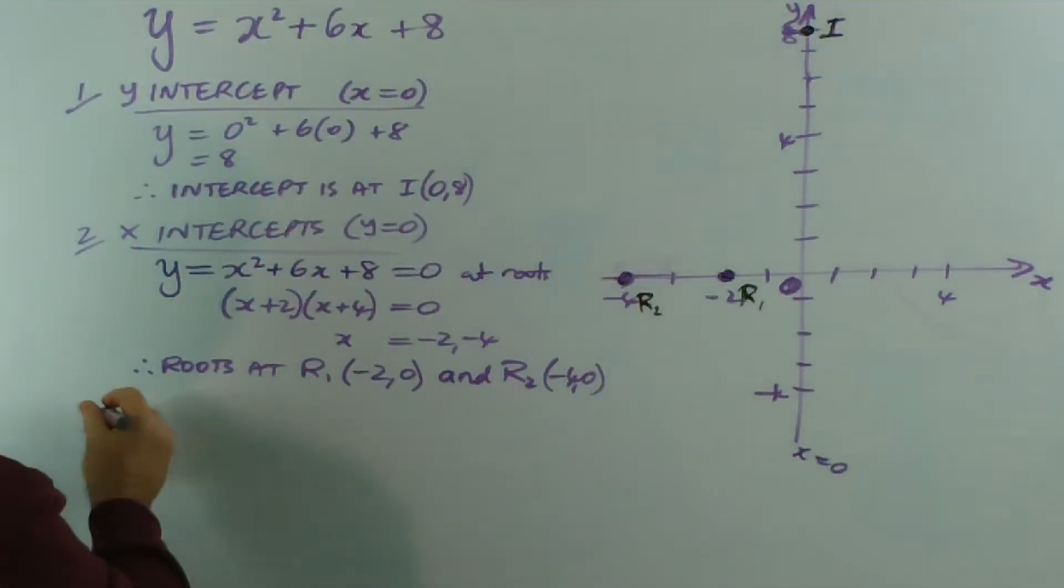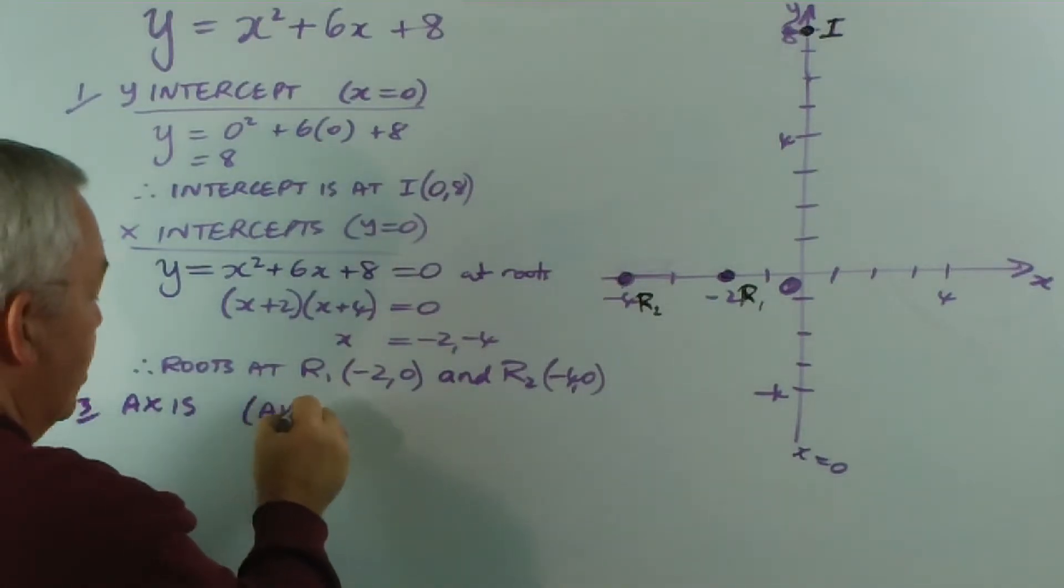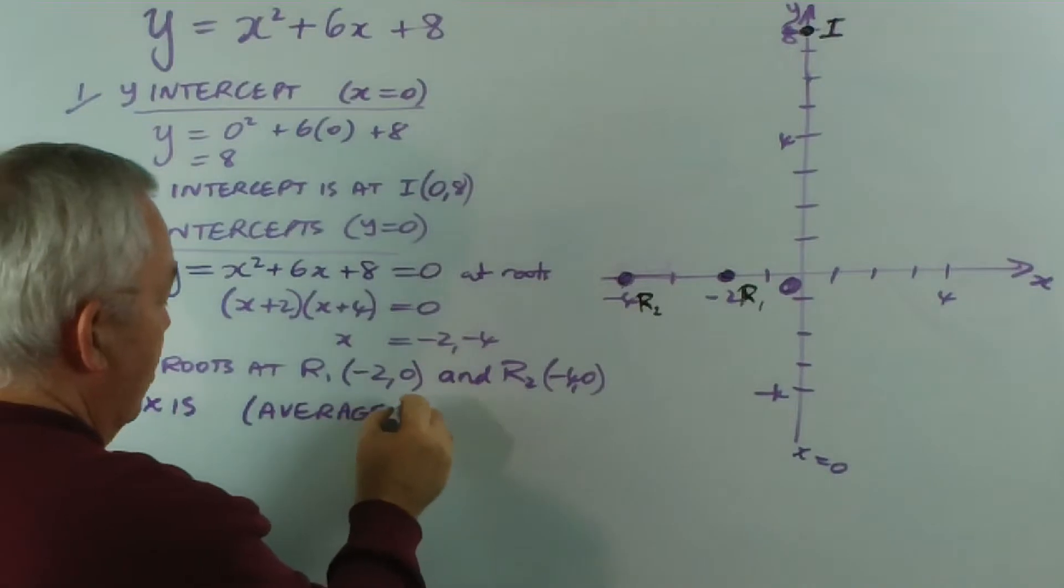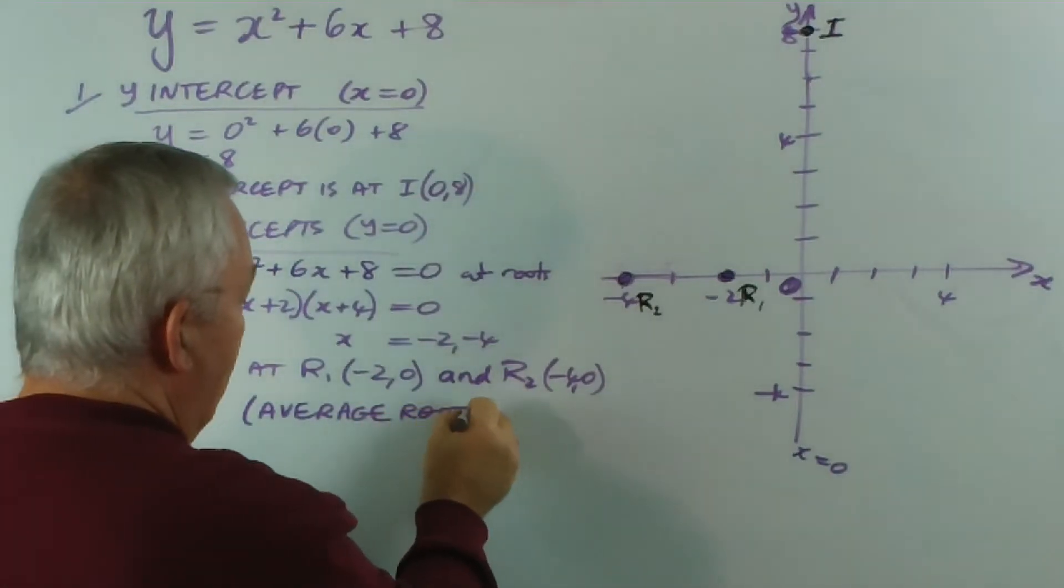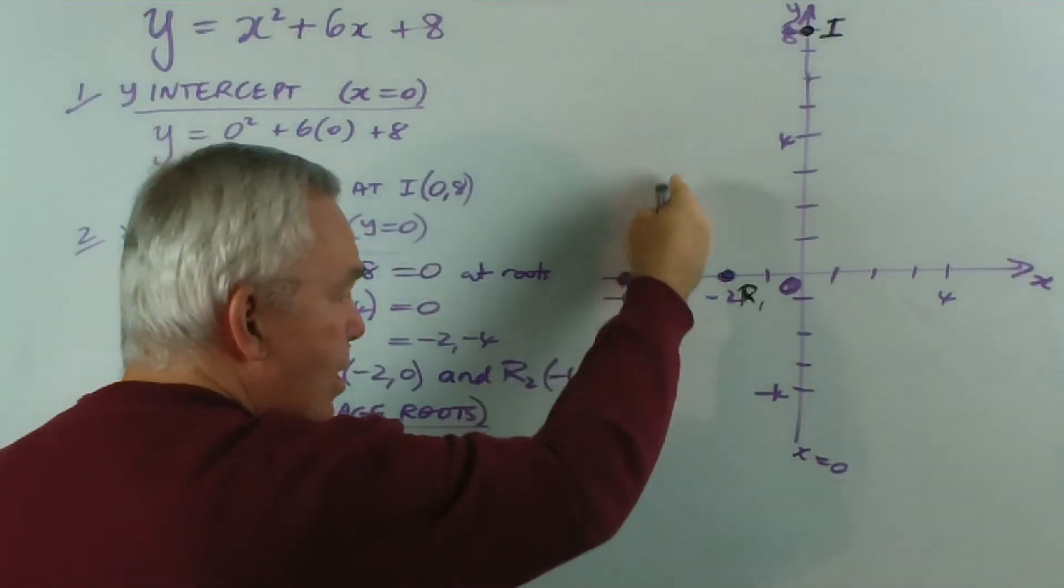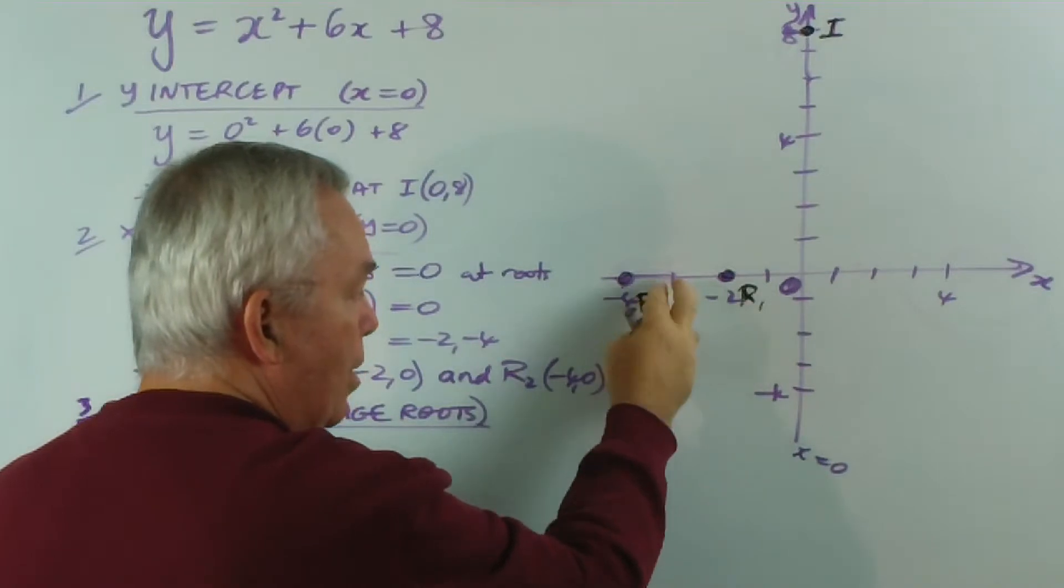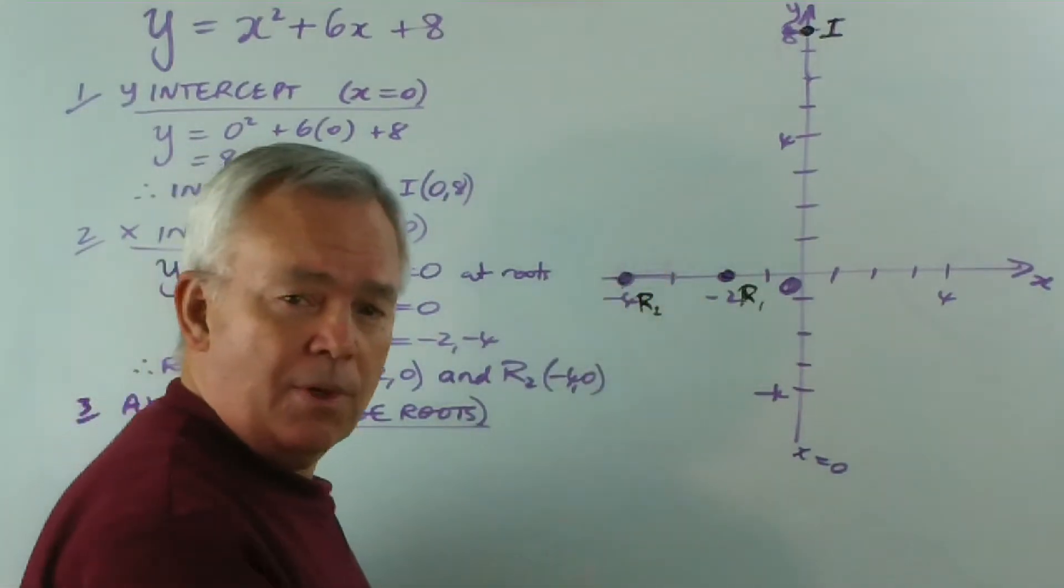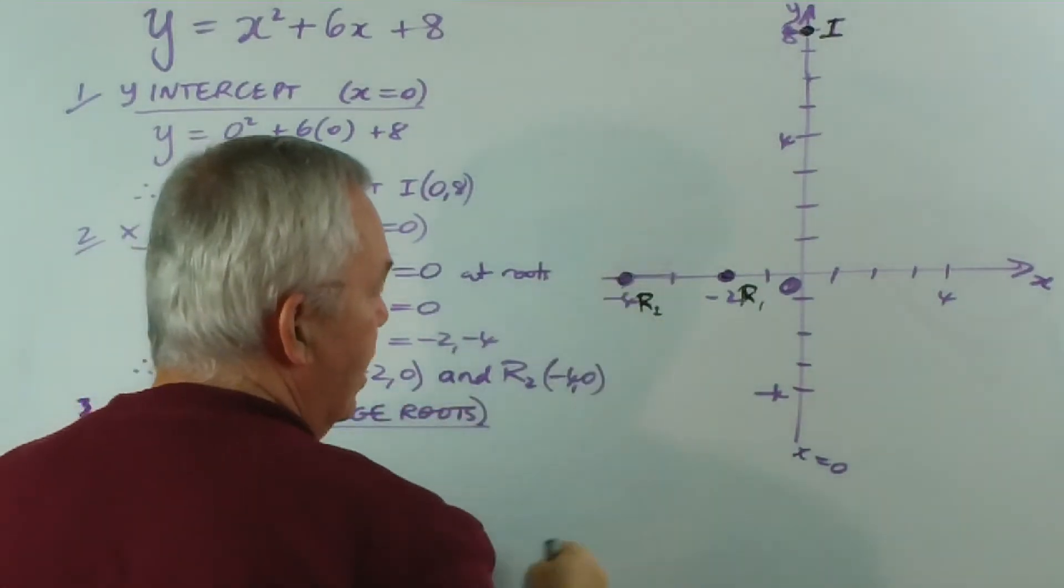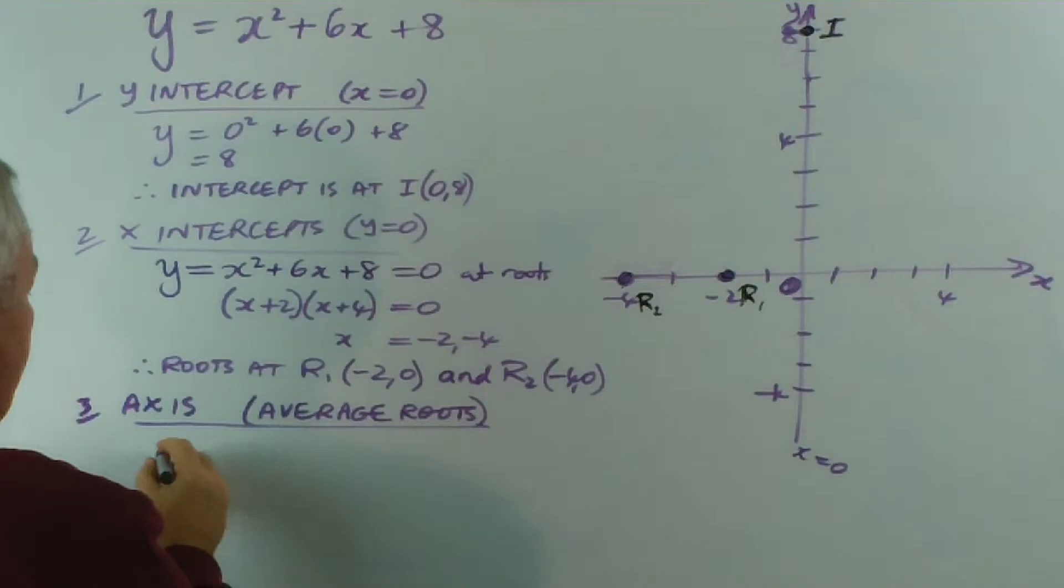The third step is to find the axis. And again, I explain how I do that. This time I'm going to average the roots. We can claim that on the basis that the axis of the parabola is exactly halfway between the two roots, because a parabola is symmetric or symmetrical. It has symmetry.